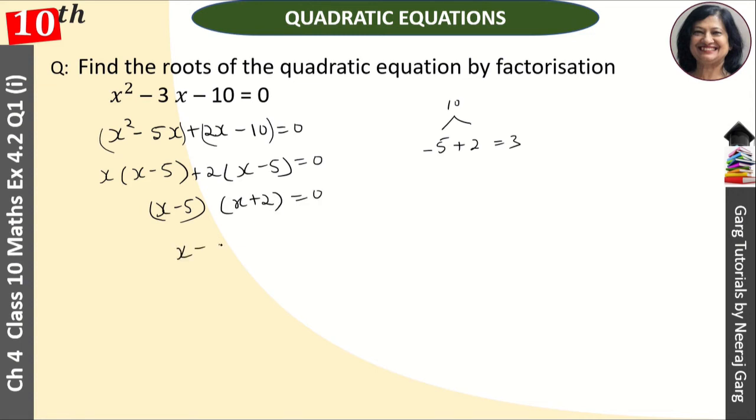It means x minus 5 is equal to 0, or x is equal to 5. Or x plus 2 is equal to 0, then x is equal to minus 2.